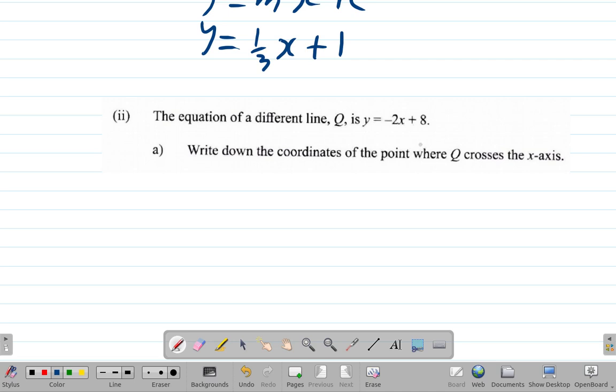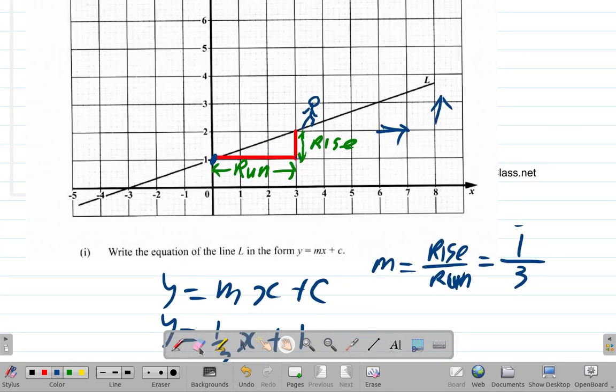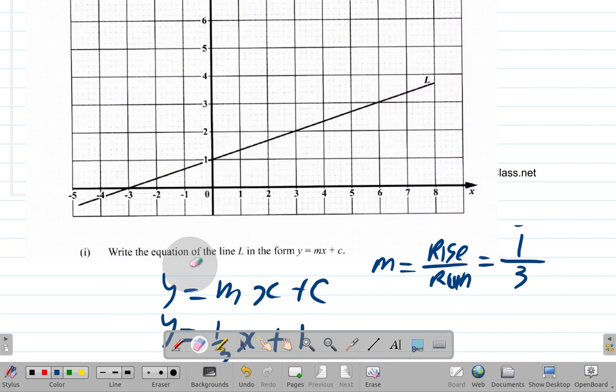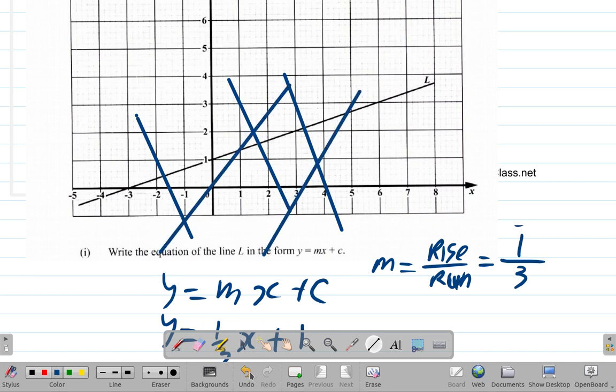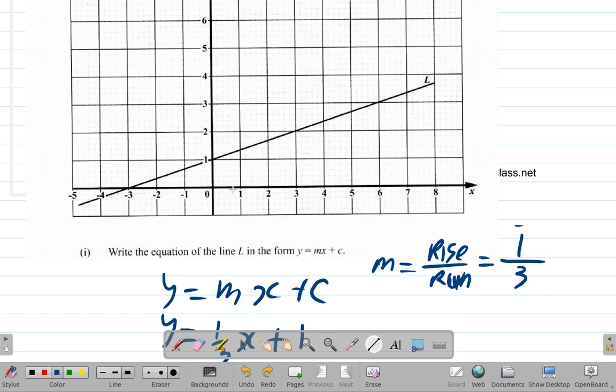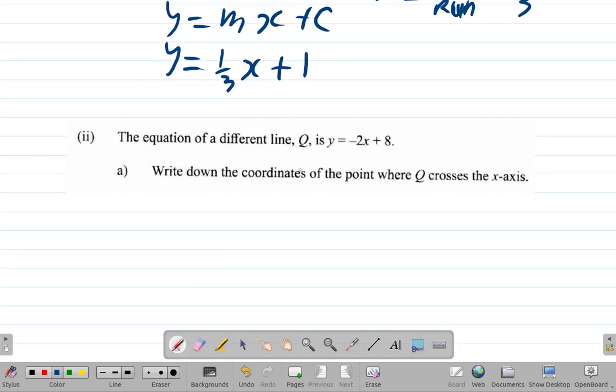Write down the coordinates of the point where Q crosses the x-axis. Wherever it crosses the x-axis must be right along the x-axis. On the x-axis, y equals 0. So one thing you could use is to equate y to 0.